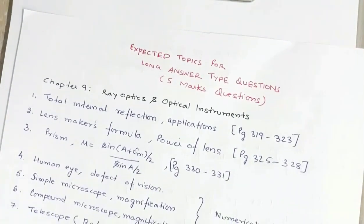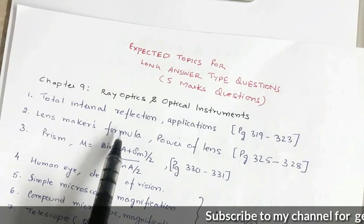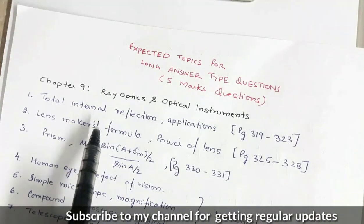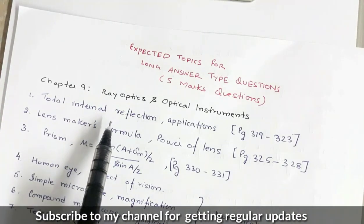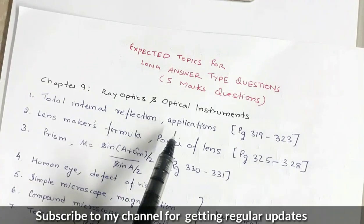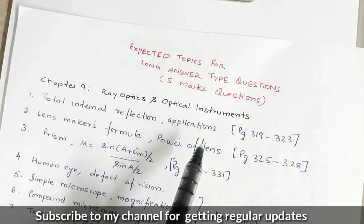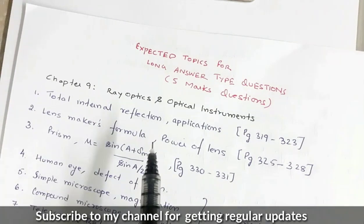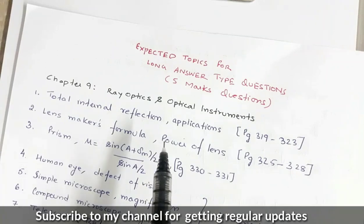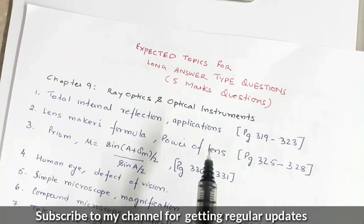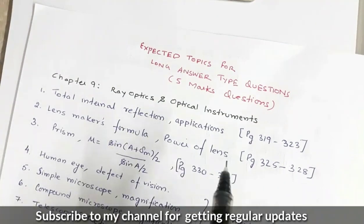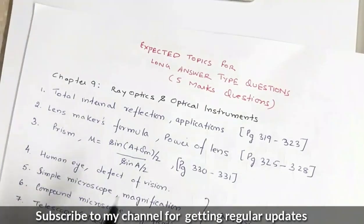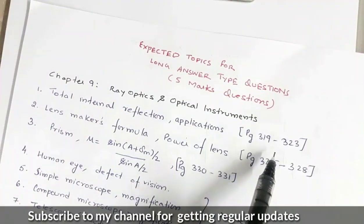From Chapter 9, Ray Optics and Optical Instruments, you may have a question based on the phenomenon of total internal reflection. You may be asked the conditions required for total internal reflection, then the applications — natural applications like mirage, and other applications like optical fibers and total reflecting prisms. This is given on page numbers 319 and 323.